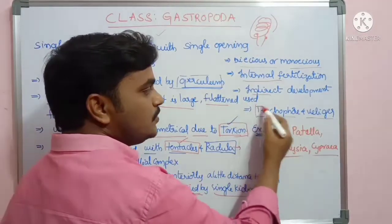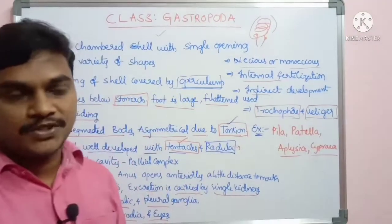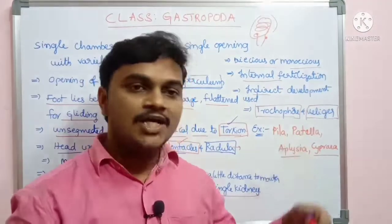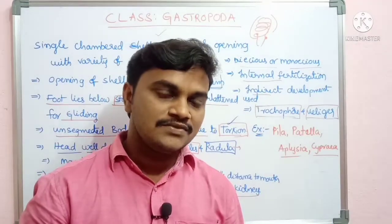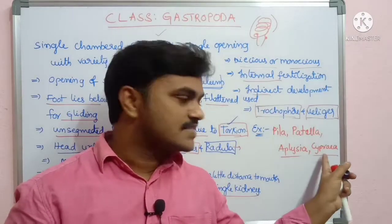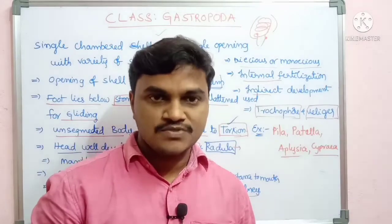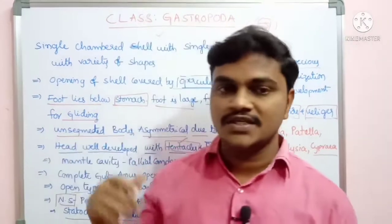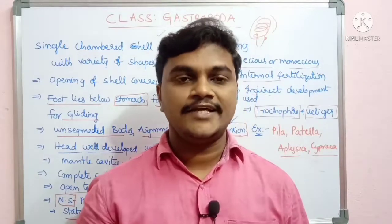Either a trochophore larva or a veliger larva is present in Gastropoda. Examples of gastropods include Pila globosa, Aplysia, Patella, and Cyprea. Gastropoda is one class belonging to the second largest phylum, Mollusca. Thank you for watching.